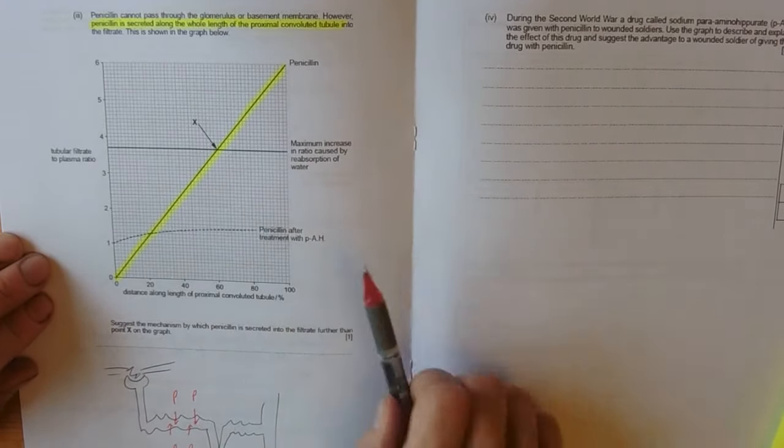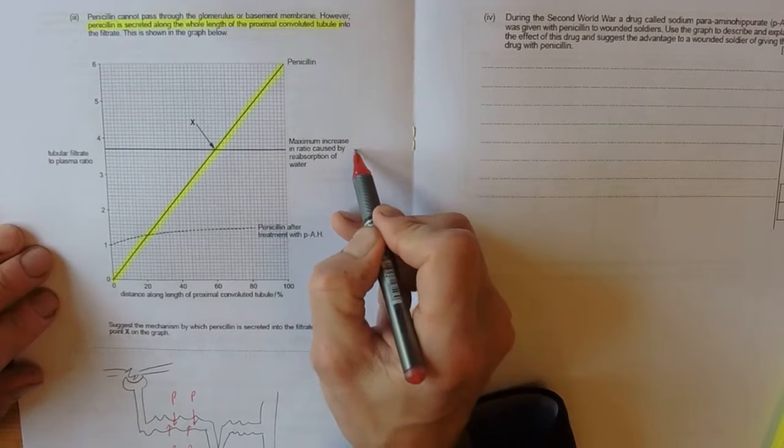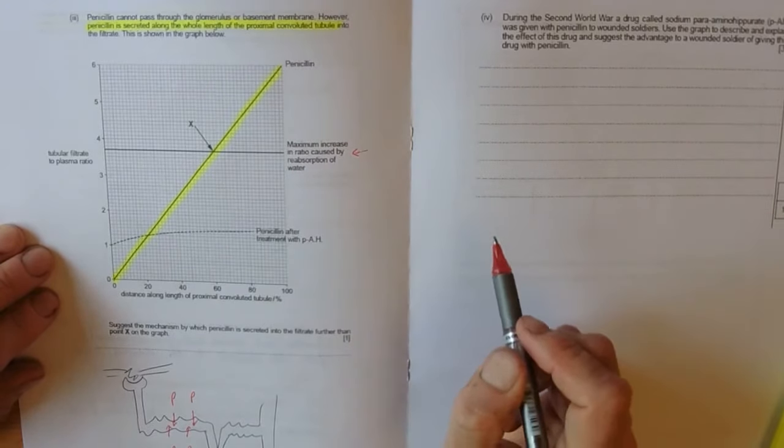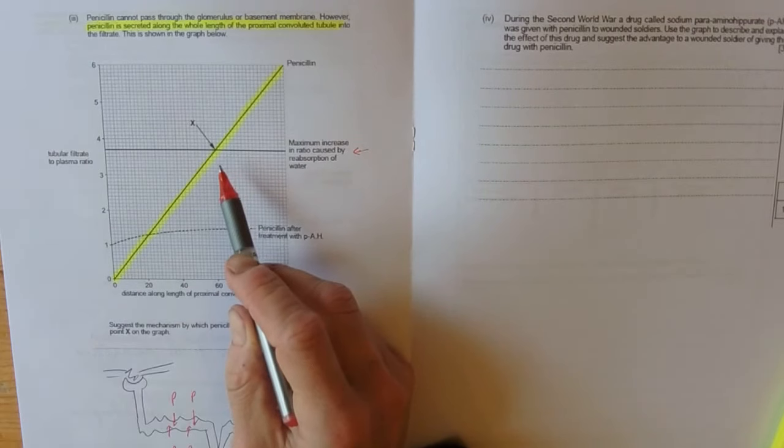And this line here is just saying, if it diffused in, this is the maximum that you could get.